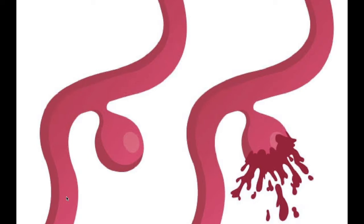What are the signs of an aneurysm? Aneurysm signs will depend upon the location and size, and whether it is ruptured or unruptured. This is a vessel, this is an unruptured aneurysm, and this is the neck of the aneurysm. The weak wall will be here. If the aneurysm ruptures, it will pour blood into the brain and increase the intracranial pressure.